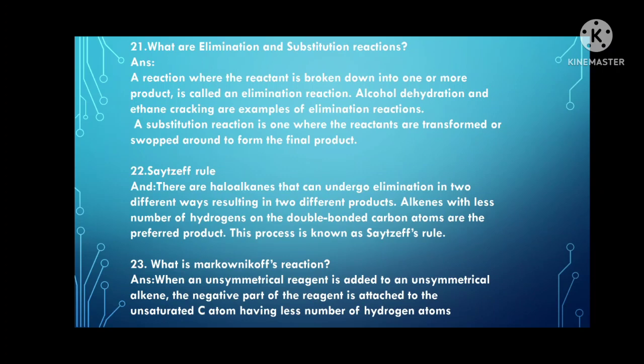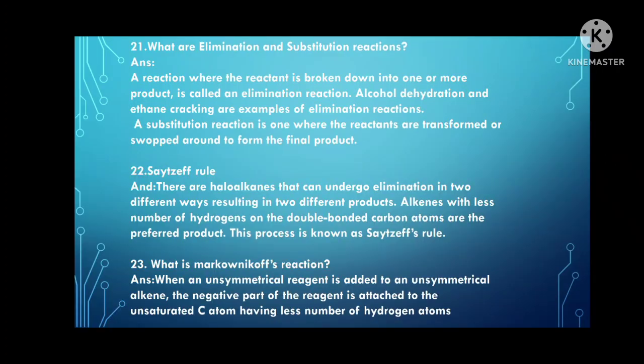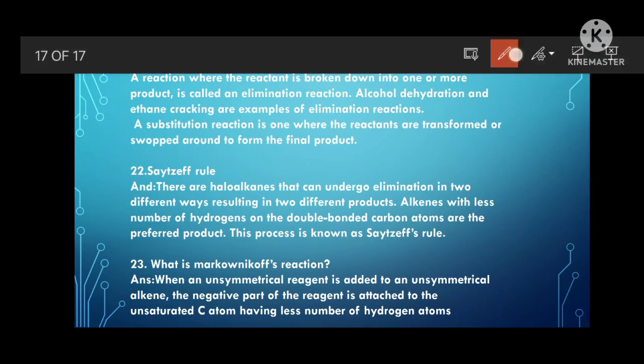What is elimination and substitution? In elimination, a reactant is broken down into one or more products — alcohol dehydration and ethane cracking are examples. In substitution, reactants are rearranged to form a final product. Major and minor products result from these reactions.